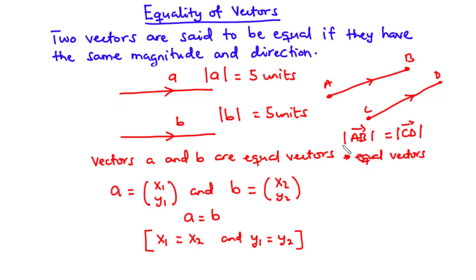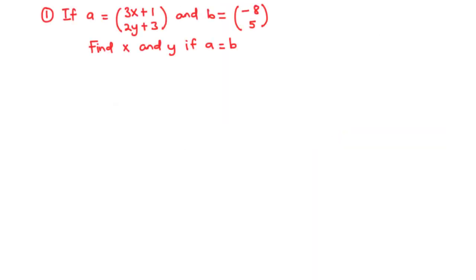Now let's consider some examples for better understanding of equality of vectors. Example 1: If vector A is equal to (3x + 1, 2y + 3) and vector B is equal to (-8, 5), find the values of X and Y if A and B are equal vectors.